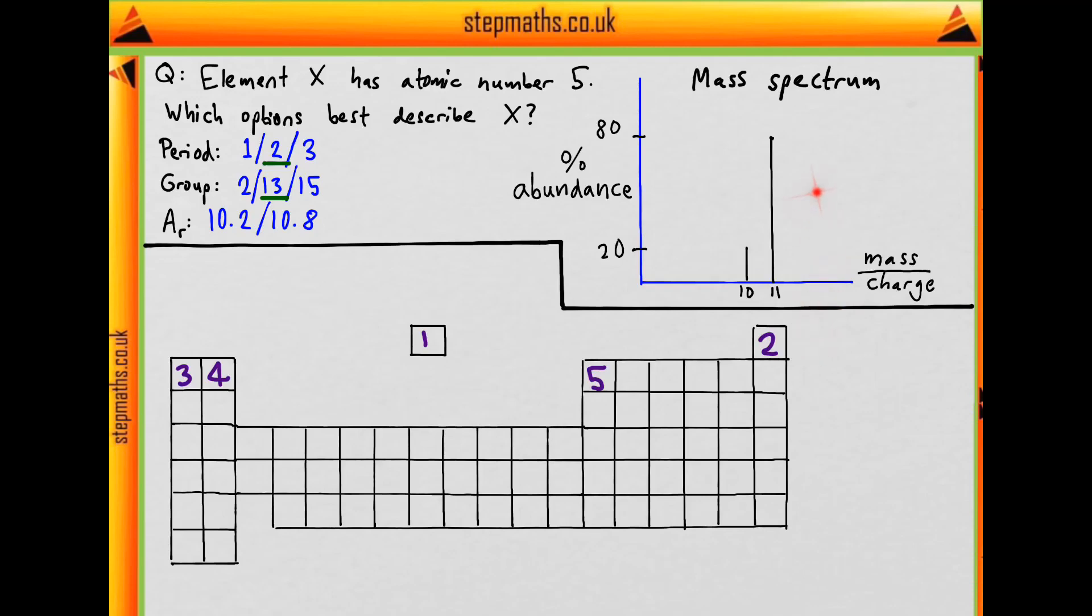What does this spectrum show us? We have an isotope with mass 10 and an isotope with mass 11. The isotope with mass 11 is more abundant.